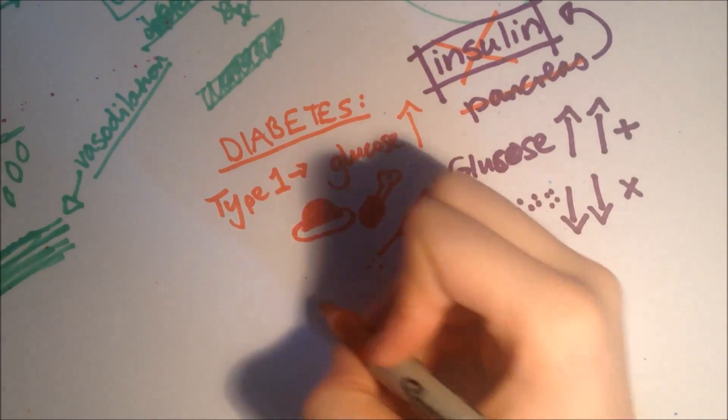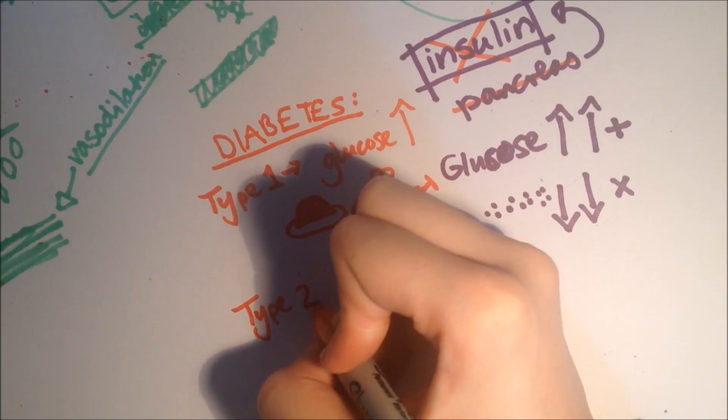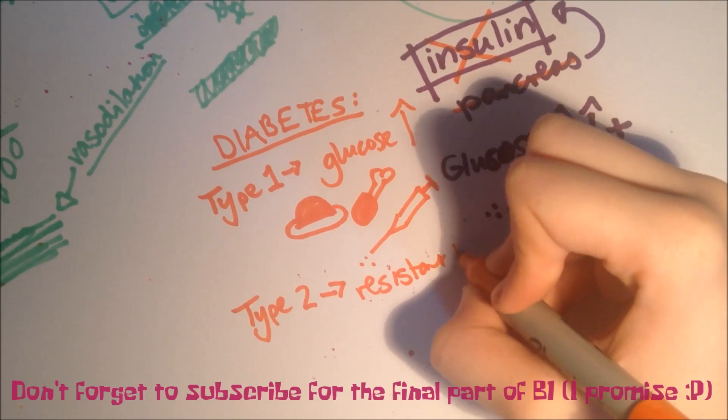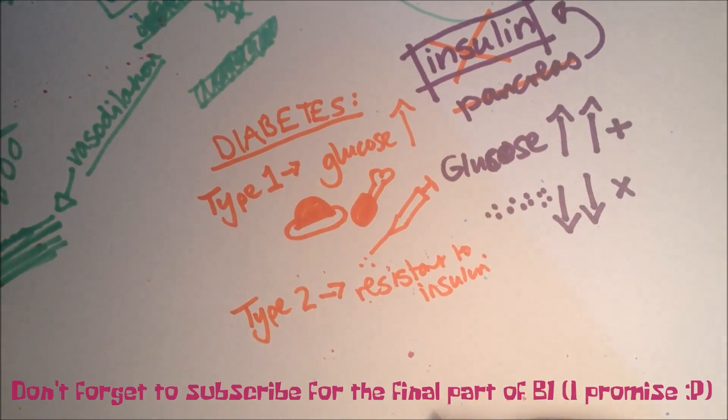And the other type, is type 2. And it's where a person becomes resistant, to insulin. Which means, their body cells don't respond properly, to the hormone.